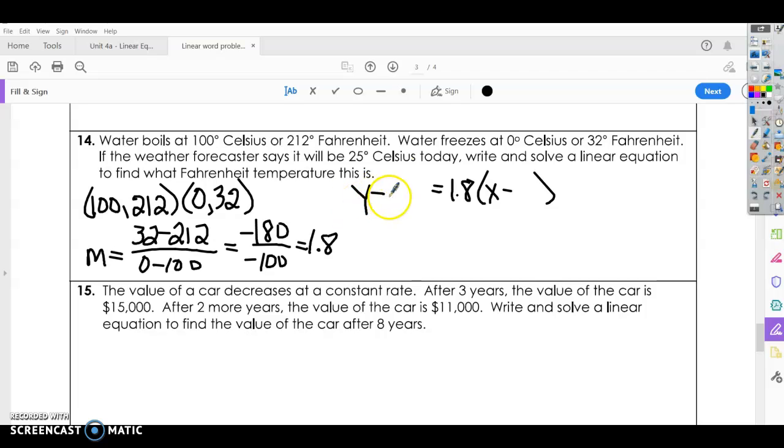Alright, so using the first one, y minus, y minus 32. And then x minus our x, which is 0. Okay, again, it doesn't matter which point you use as long as you use the same x and y from the same point. Alright, so here I'm going to say y minus 32 equals 1.8x and then 1.8 times 0 just cancels. That's 0. And then I'm going to add 32.